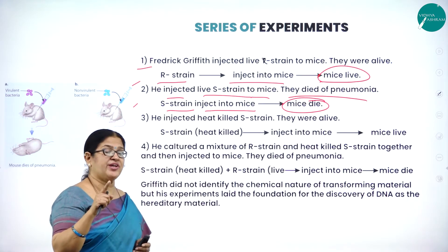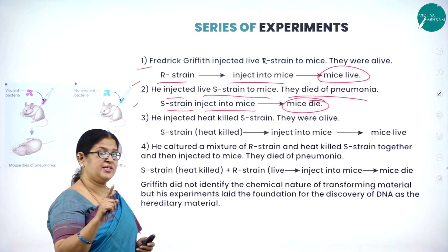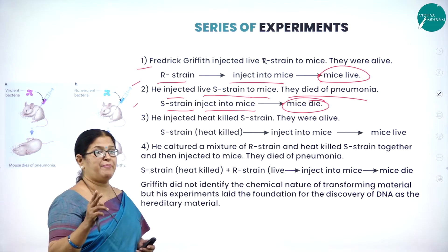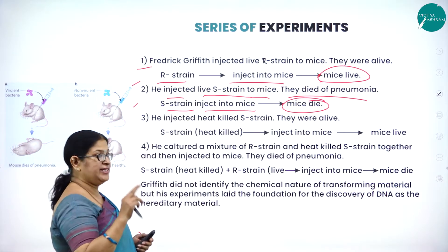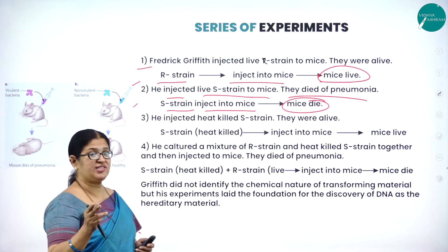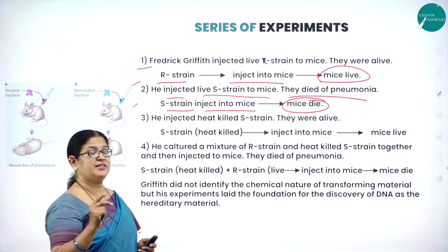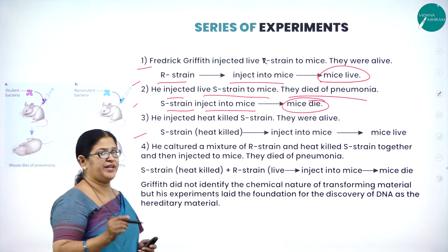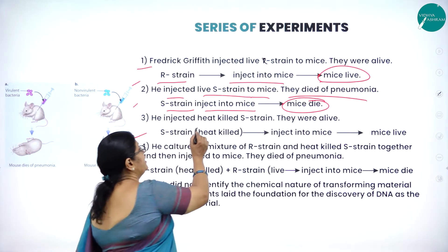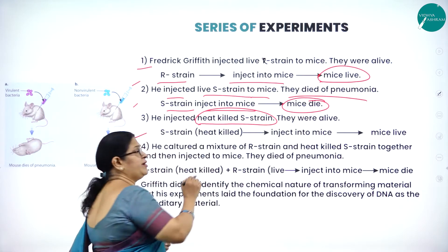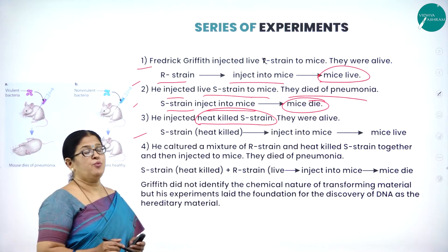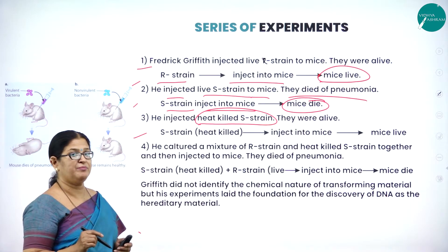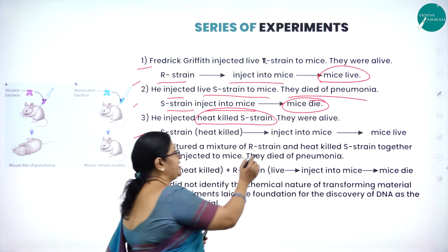In the first step he injected R-strain into the body of mice, and they survived because R-strain was non-virulent. In the second step he injected the virulent S-strain and the mice died of pneumonia. In the third step he injected heat-killed S-strain. When S-strain bacteria is subjected to heat it becomes non-virulent, so its DNA is non-functional, and when injected into the mice, the mice lived.